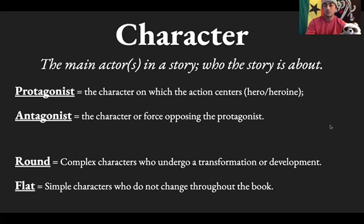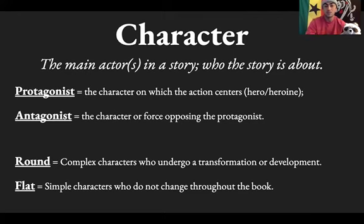Characters. There are many characters that can exist in a story, but generally speaking, characters are the main actors in a story — who the story is about. The protagonist is usually the character on which the action centers; the hero or heroine, the main character. In the case of Black Panther, it's T'Challa. The antagonist is the character or force opposing the protagonist — it can be a person or a force. In Black Panther, Killmonger was the antagonist.